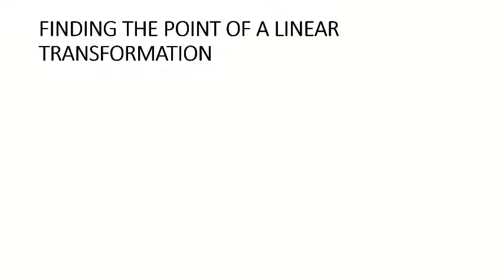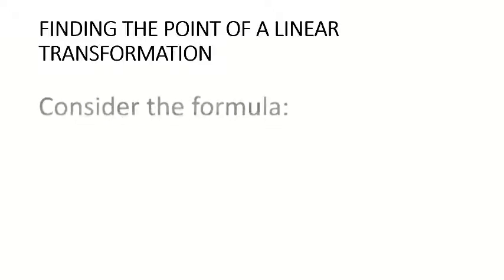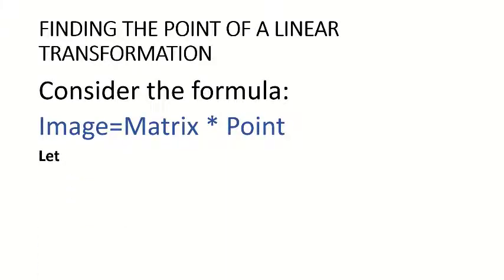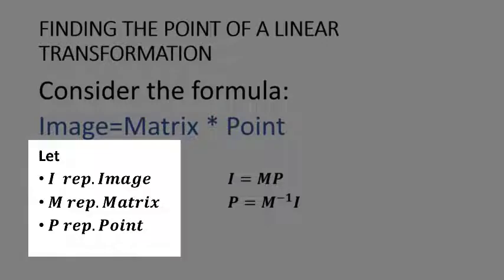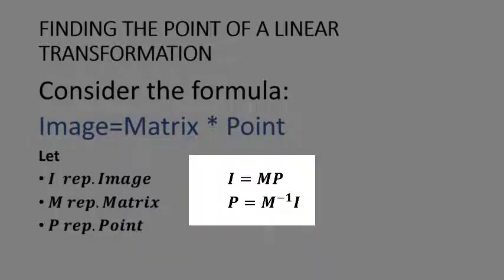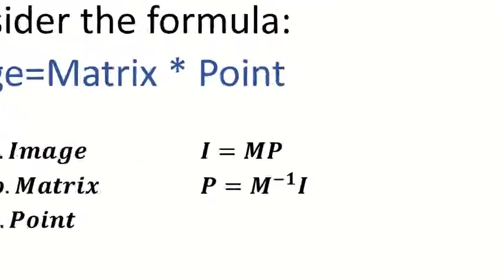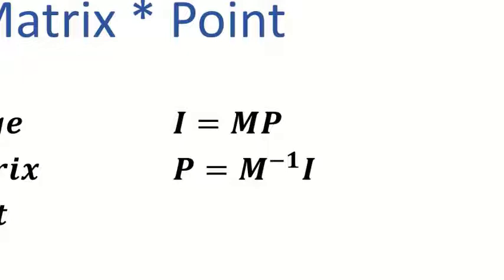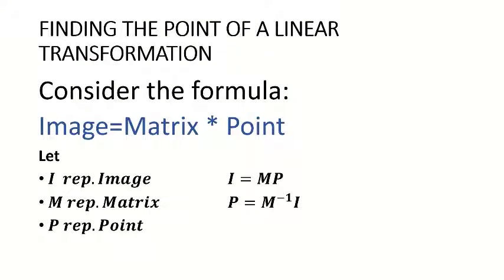Now let's consider finding the point of a linear transformation — this is the other way around. Here the image is given and we are finding the point. Using the formula I = MP, if we want to make P the subject, M moves to the other side and becomes an inverse: P = M inverse × I. So we find the inverse of the matrix and multiply by the image.